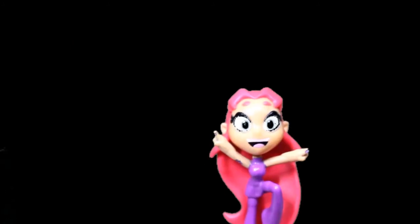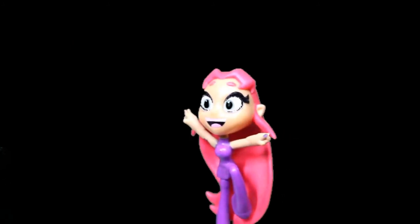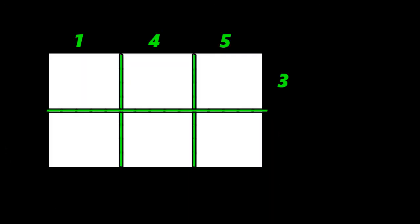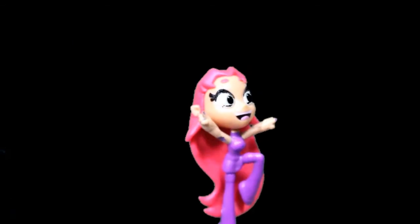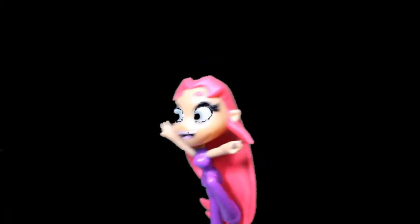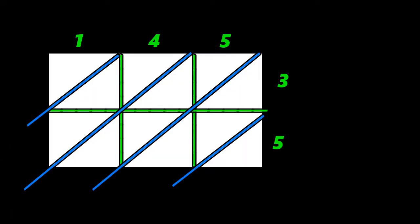Are you with me? Yes! Now, let us write our multiplier. Write three, and then five. After this, we will draw a diagonal line inside the box. We will extend the line here so that we can emphasize our answer.